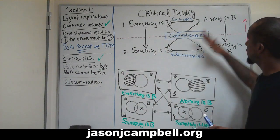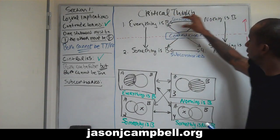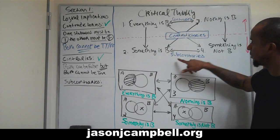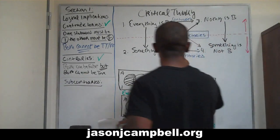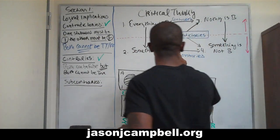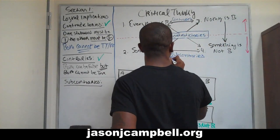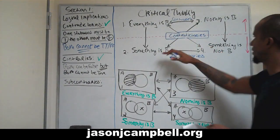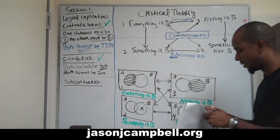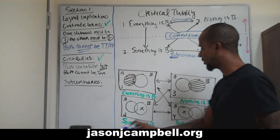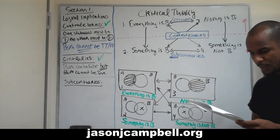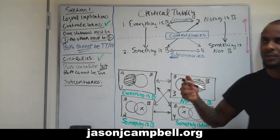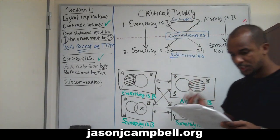So, contradictions diagonally, contraries top horizontal, subcontraries indicated by 'sub' beneath — which is simple. Sub beneath, run this direction horizontally. So we're going to be looking at two and four. Subcontraries are a little bit different. It's really just the opposite, obviously, of contraries, logically speaking.